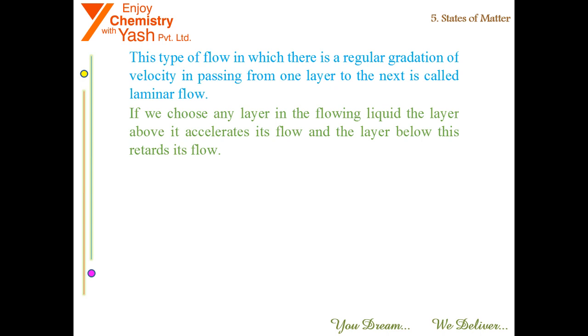You can see the middle layer has a velocity u, the upper layer has a velocity u plus du, and the lower layer has a velocity u minus du. This type of flow is called laminar flow.